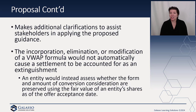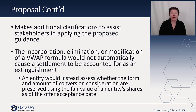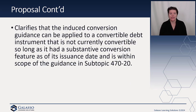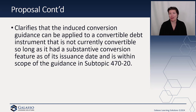The proposal also provides additional clarifications to assist stakeholders in applying the proposed guidance, particularly around the inducement offer. It incorporates the elimination of or modification to the VWAP formula and would not automatically cause a settlement to be accounted for as an extinguishment - that was a question that had been raised and was unclear. Instead, the entity would assess whether the form and amount of conversion consideration are preserved using fair value as of the offer acceptance date. It also clarifies that the induced conversion guidance can be applied to a convertible debt instrument that is not currently convertible, so long as it has a substantive conversion feature as of the issuance date and isn't within the scope of Topic 470-20.